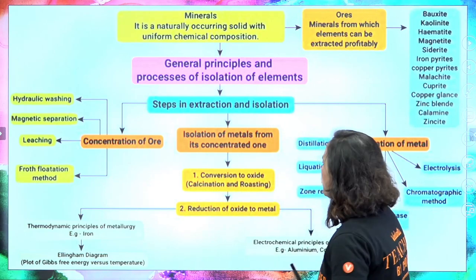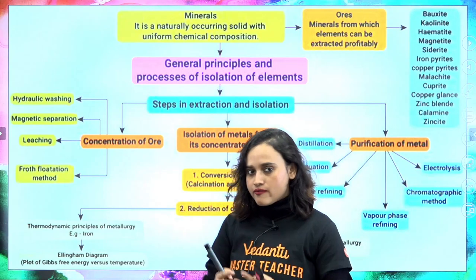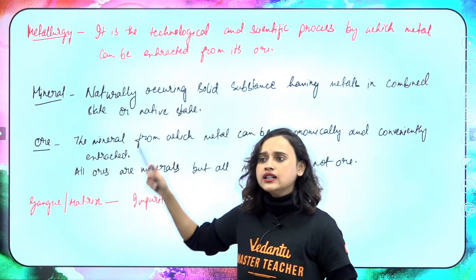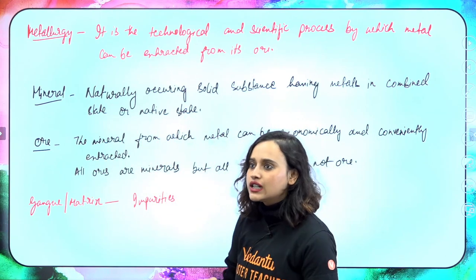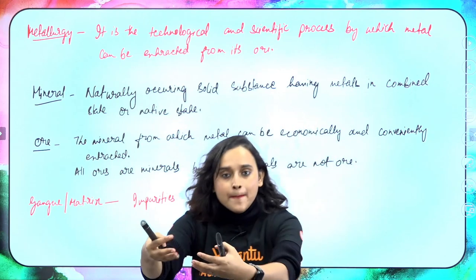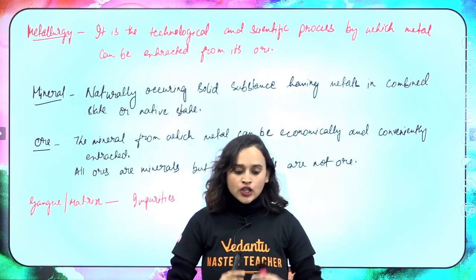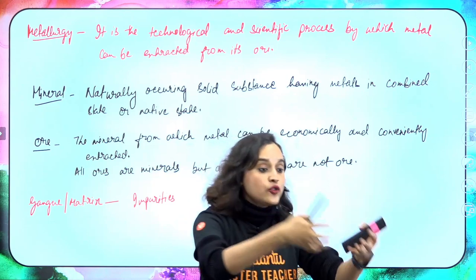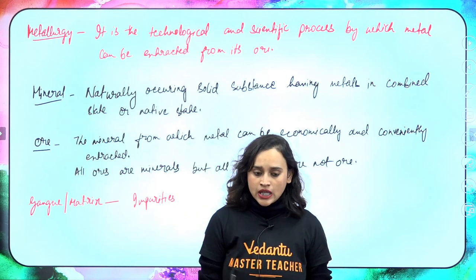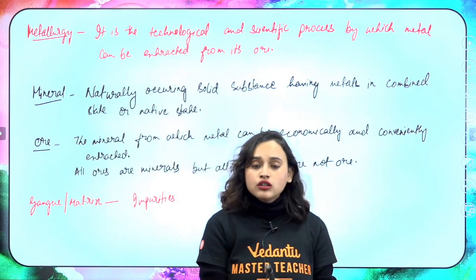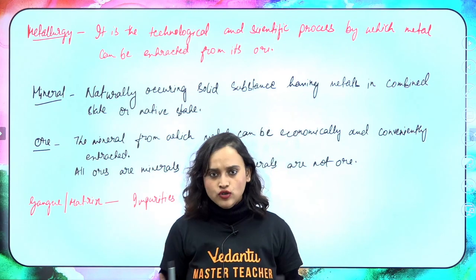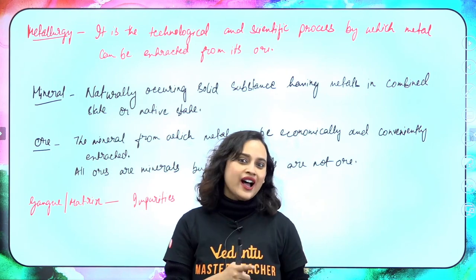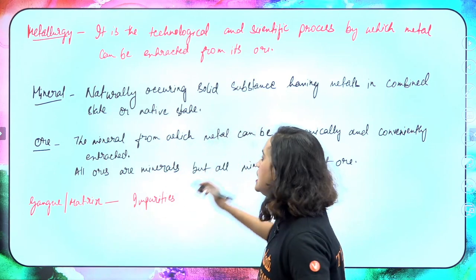Metallurgy — what exactly is metallurgy? When we come to this topic, first we have to understand that metallurgy is basically a technological and scientific process by which metal can be extracted from its ore. Metals are usually found under the ground or somewhere else, so you have to extract them and bring them out from the ore — that is metallurgy. Now when we study this chapter, there are some basic terms we have to know.